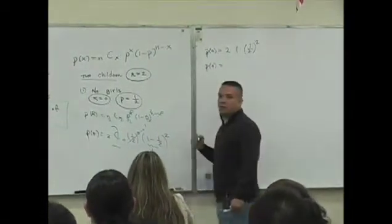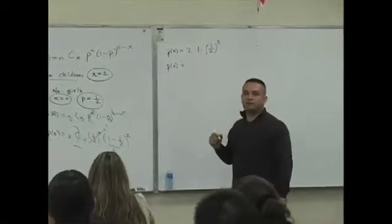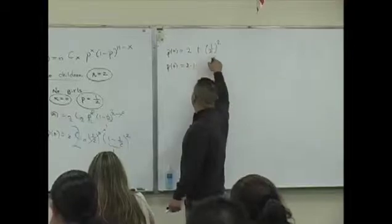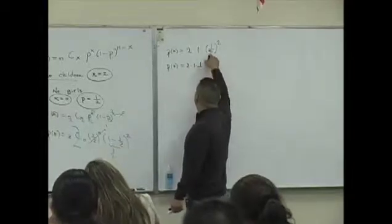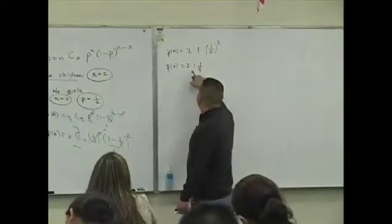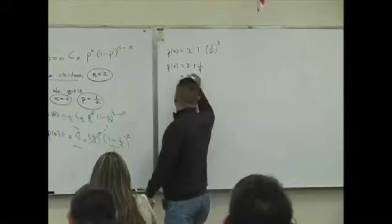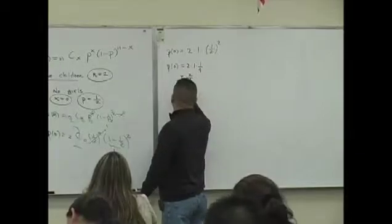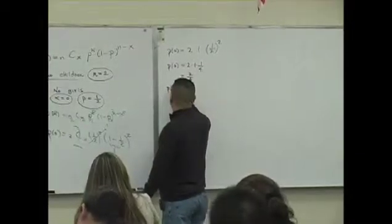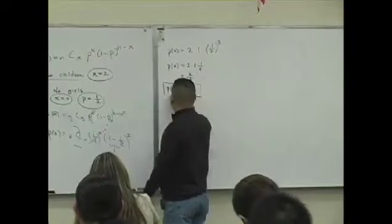Order of operation, please excuse my dear aunt Sally. 2 times 1 times 1/2 to the second - that's 1/4. What's 2 times 1 times 1/4? 2 over 4, which is 1/2. P of 0 is 1/2.